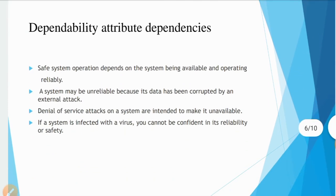Dependability attributes: safe system operations depend on the system being available and operating reliably. A system may be unreliable because its data has been corrupted by an external attack. Denial of service attacks on a system are intended to make it unavailable. These types of attacks and queries should be handled by your system. If a system is infected with a virus, you cannot be confident in its reliability or safety.